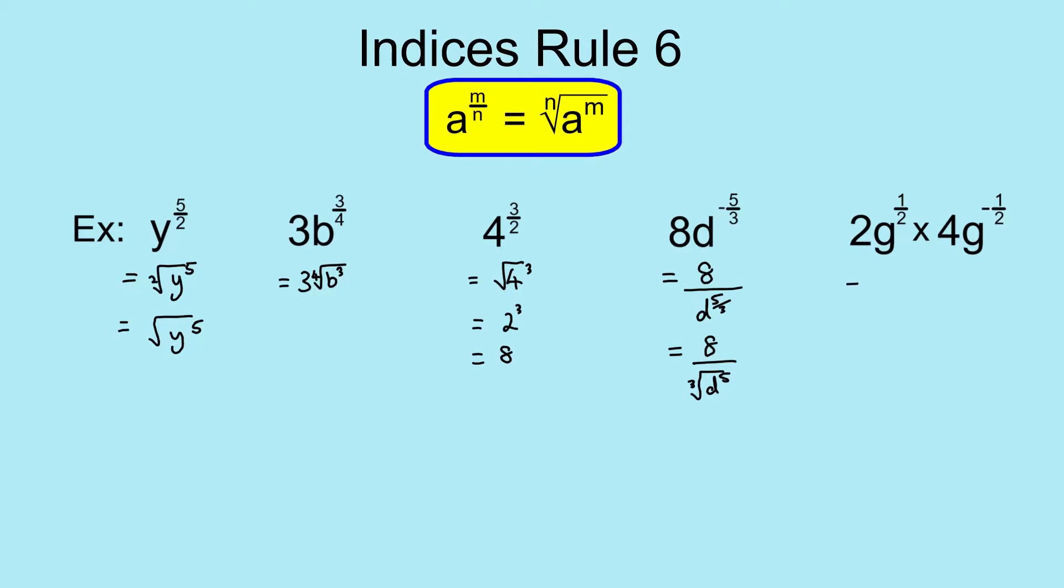And a final example, we've got our multiplication rule. Again, the whole number, the coefficients just work as normal. 2 times 4 is 8. Nothing more complicated than that. Remember back from rule 1, you're multiplying indices and we've got to add the powers. So it's a half plus negative a half, and that actually works out as g to the power of 0.